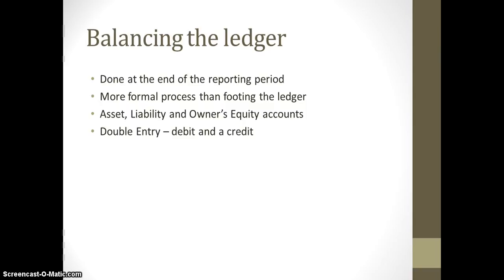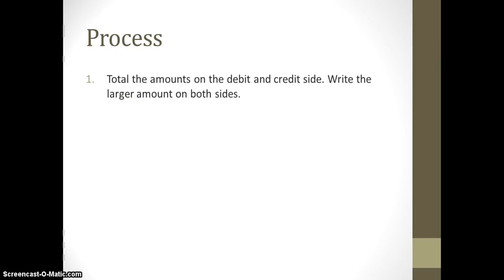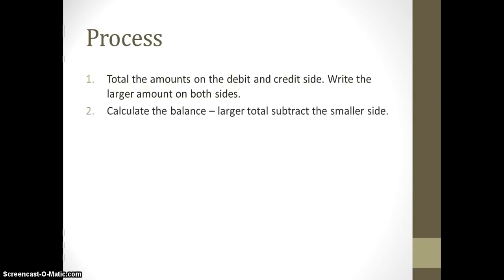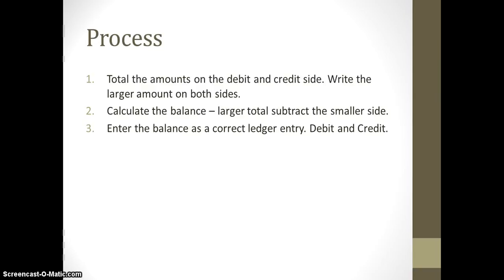Balancing your ledger accounts requires a double entry — you'll have to enter a debit and a credit. The first thing you want to do is add up the total debit and credit side and write down the larger of the two on both sides of the ledger. Then calculate the balance by subtracting that large total from the smaller value. Then enter the balance as a proper ledger entry with one debit and one credit to the same ledger account.